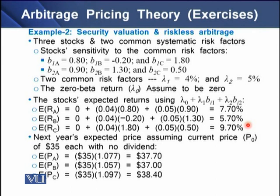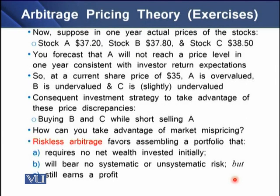Assuming the current price for each stock is $35 with no expected dividend, we calculate next year's expected price by multiplying the current price by (1 + expected return). This gives expected end-of-year prices of $37.70 for stock A, $37.00 for stock B, and $38.40 for stock C. Now assume the actual prices after one year turn out to be: stock A = $37.20, stock B = $37.80, and stock C = $38.50.